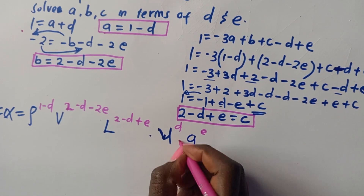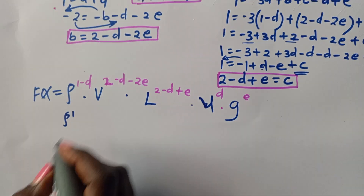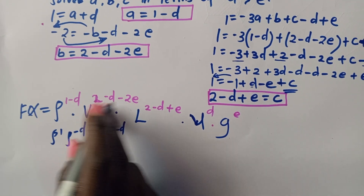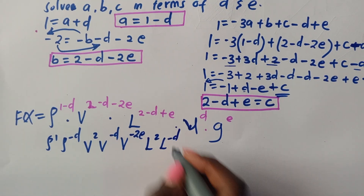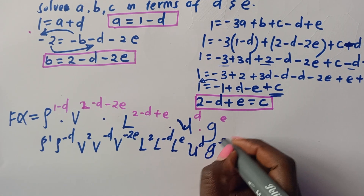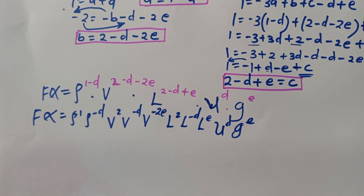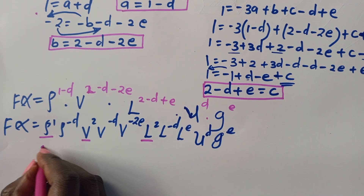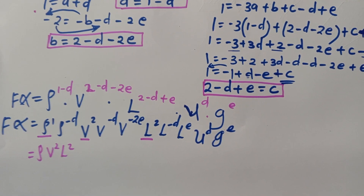Opening the brackets: we get rho¹ · rho⁻ᴰ, V² · V⁻ᴰ · V⁻²ᴱ, L² · L⁻ᴰ · Lᴱ, mu raised to D, and G raised to E. Collecting the whole-number powers together gives rho · V² · L².